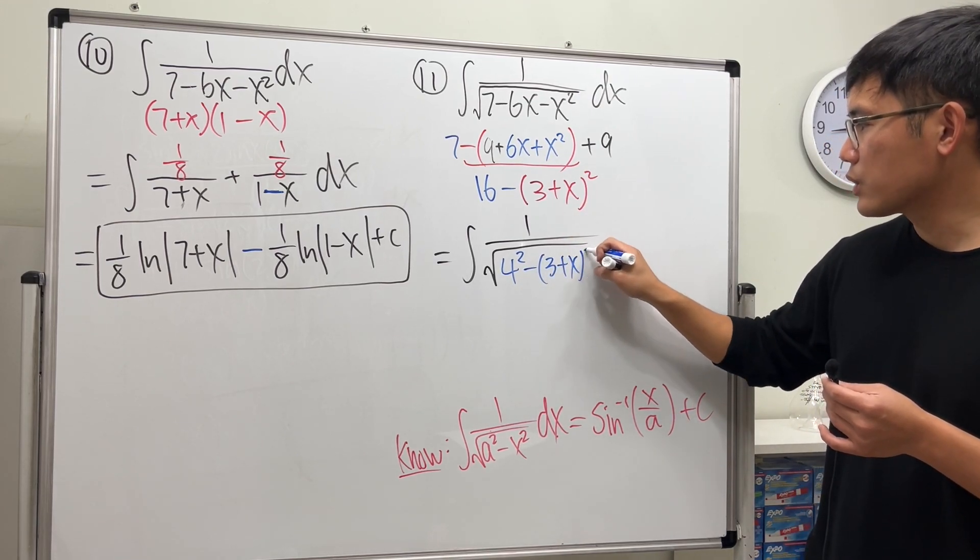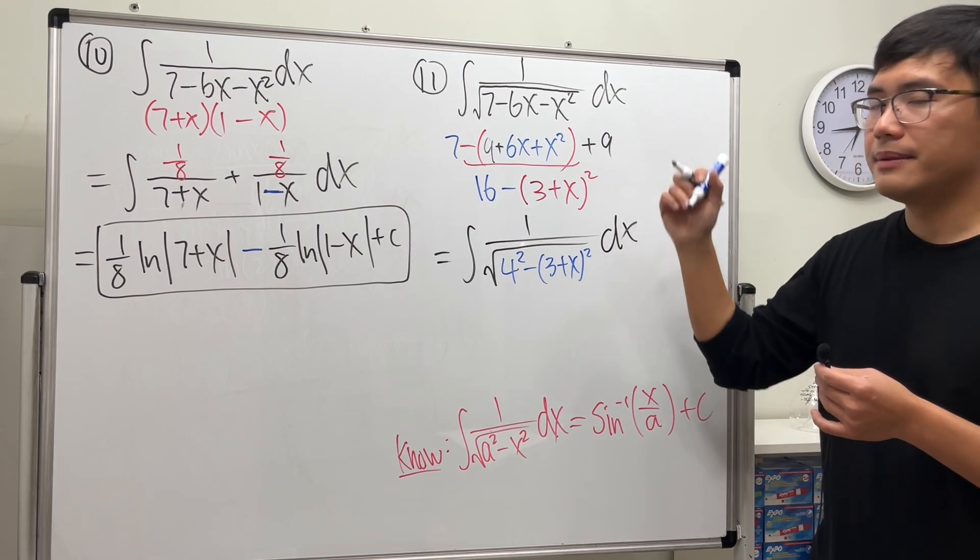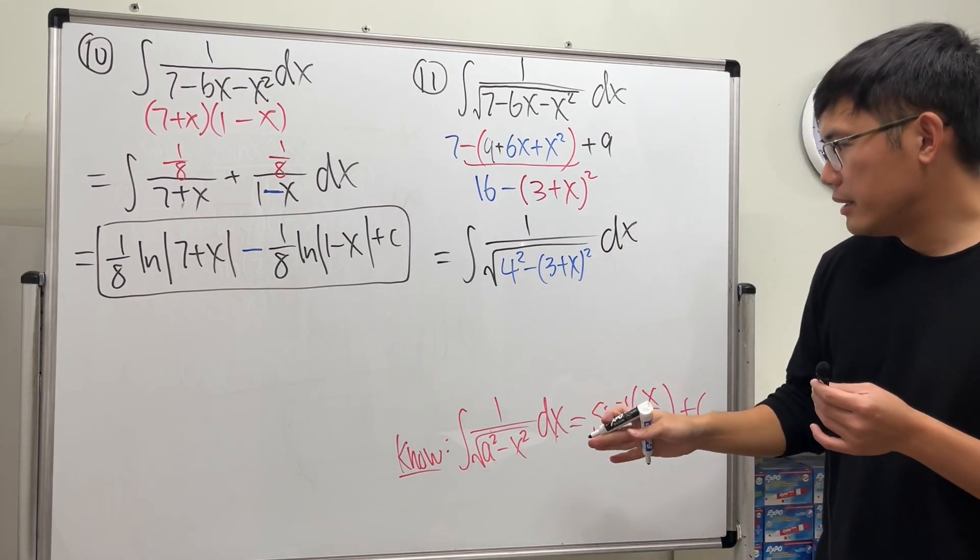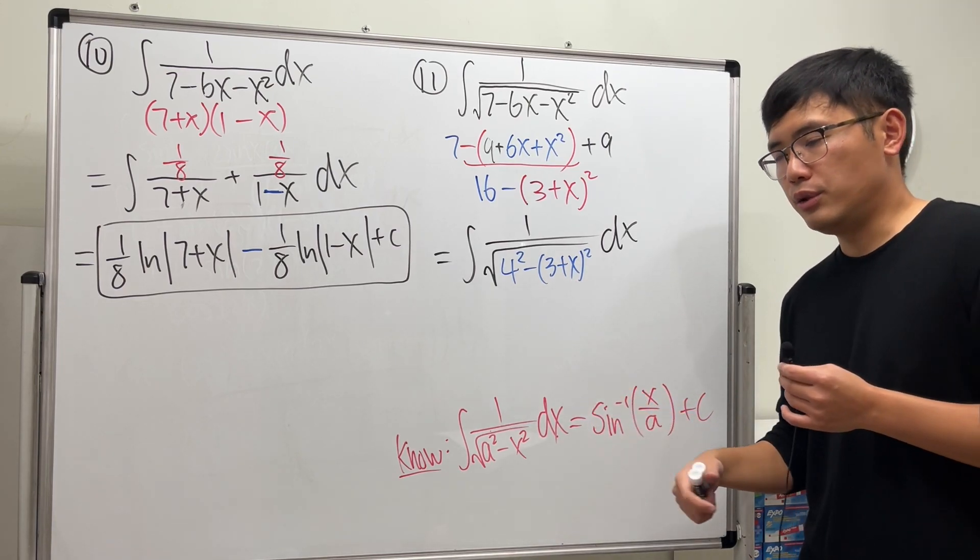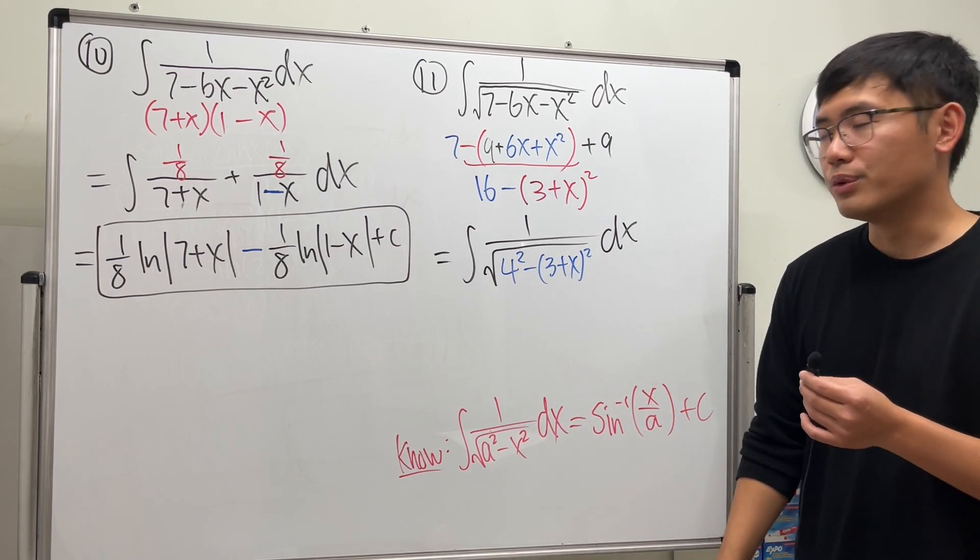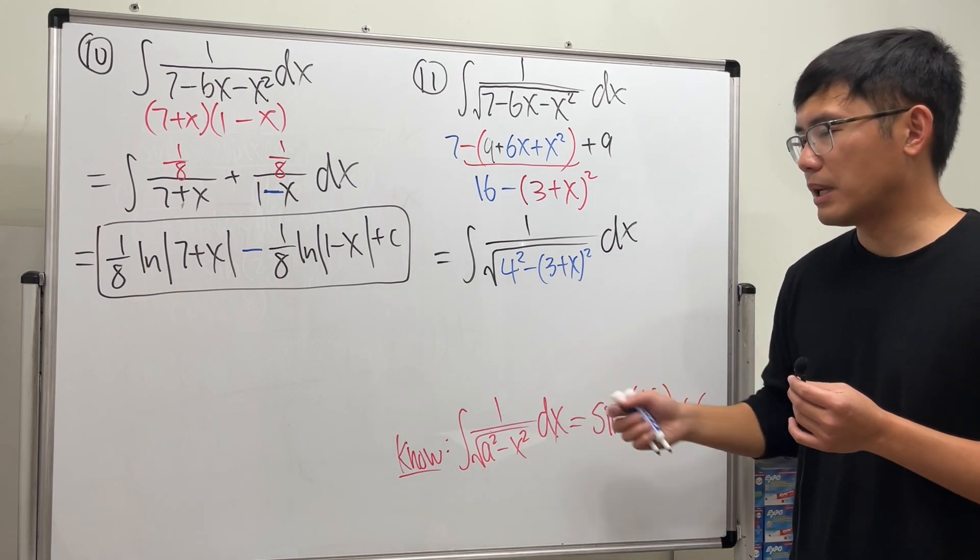Yeah, now take a quick u-sub. Let u equal 3 plus x, and the derivative of that is just dx is equal to du. So we don't have to divide anything or multiply by anything.